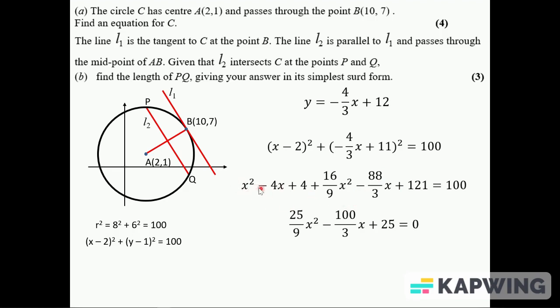And then simplify it. I've got x squared and 16/9, that's 25/9 x squared, minus 12/3 x here. Take the 100 over, I'll have 125, take 125.